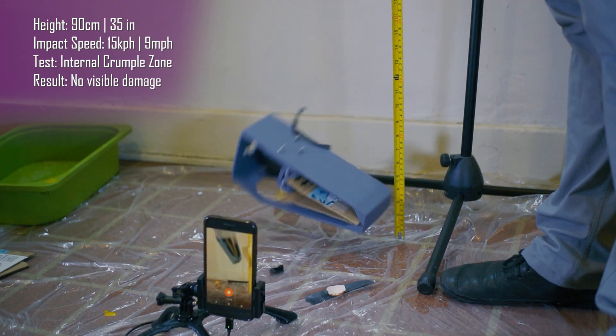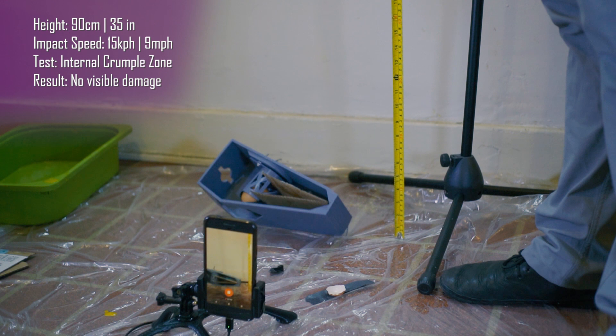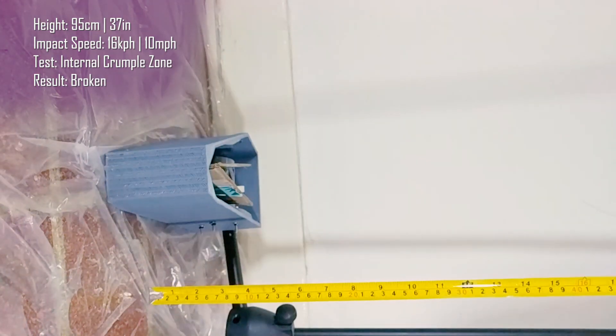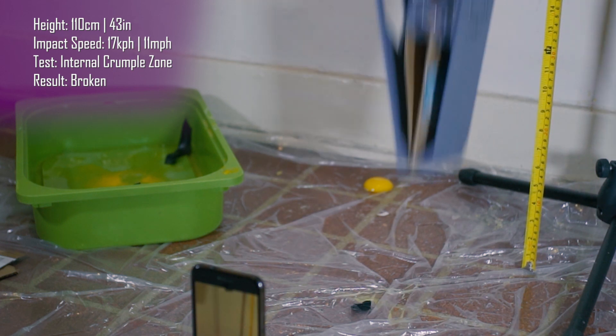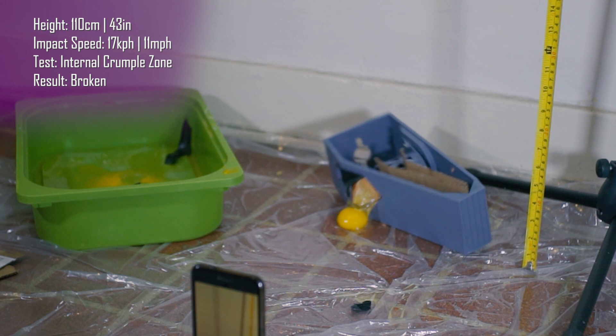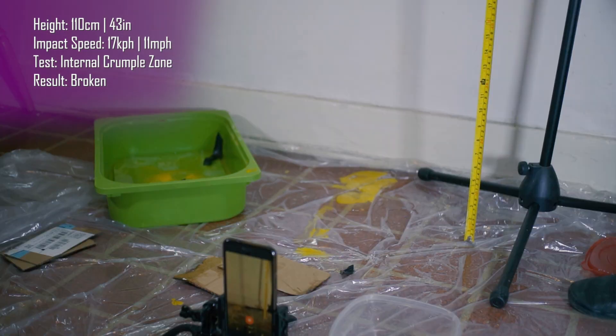The cardboard consistently kept the egg safe all the way to 90 centimeters. After that it became unpredictable. For example, at 110 centimeters one of the tests cracked the egg really well, but on the next try the egg bounced up the rig completely unscathed.